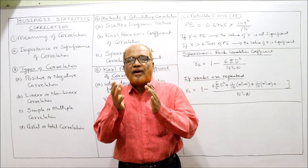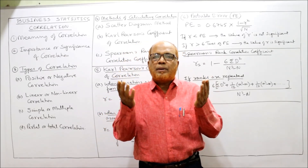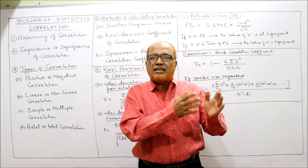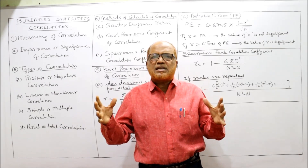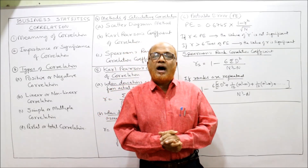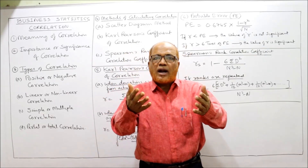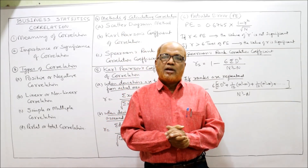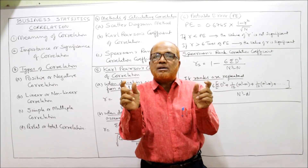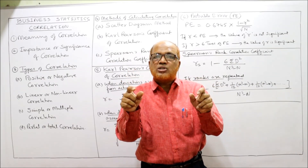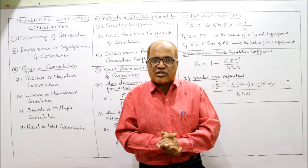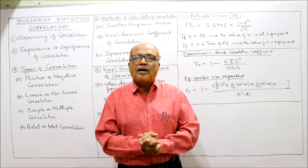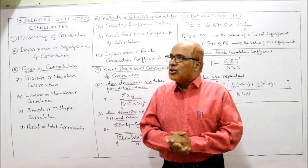Similarly, we have the case of income and investment — as income of people increases, investment will also increase. Another example: advertisement and sales — by giving more advertisement, sales will increase; with less advertisement, sales may not be as high. In this way there are many instances where we have some relationship. To find out whether it is positive or negative, high degree or low degree, we apply the technique called correlation analysis.